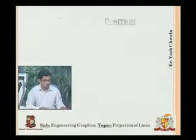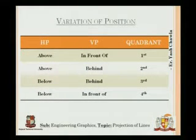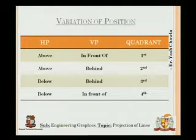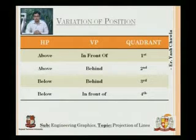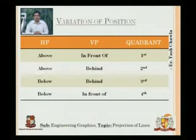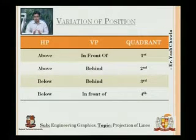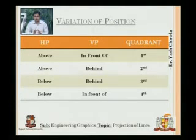If the position of the object, point, or line is above HP and in front of VP, then it is in the first quadrant. If it is above HP and behind VP, it is in the second quadrant. If it is below HP and behind VP, it is in the third quadrant. If it is below HP and in front of VP, it is in the fourth quadrant.